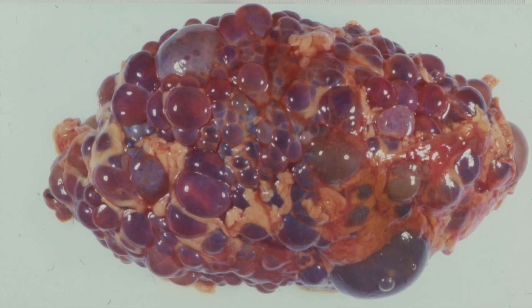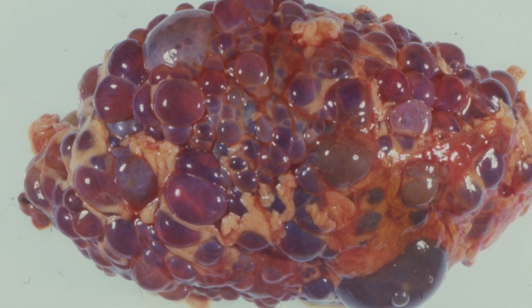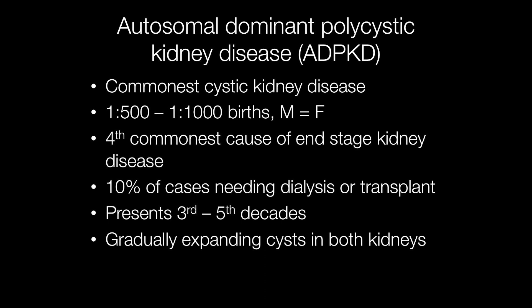This is the gross appearance of a typical adult polycystic kidney, an example of autosomal dominant polycystic kidney disease, or ADPKD. This is the commonest cystic kidney disease with a frequency of between 1 in 500 and 1 in 1000 births, with no sex predominance. It is the fourth commonest cause of end-stage kidney disease, and around 10% of cases needing dialysis or transplant are patients with ADPKD. It presents in the third to fifth decades as these cysts gradually expand and over time compromise normal renal function.